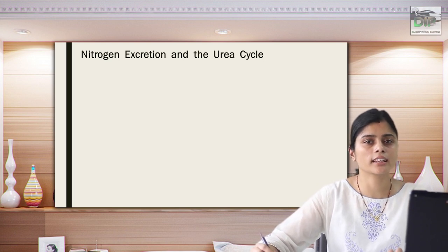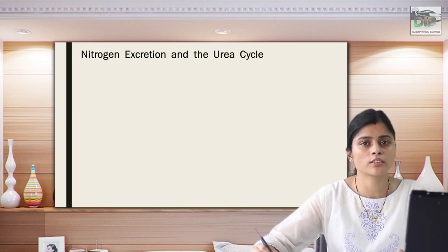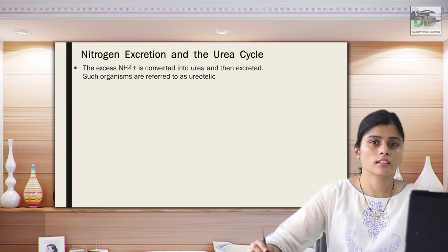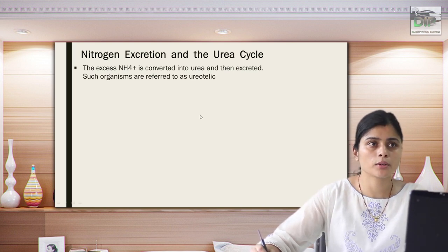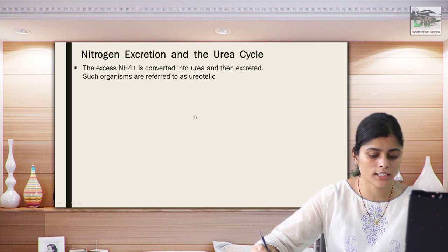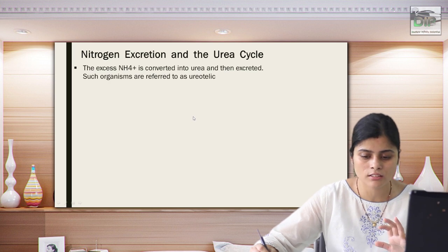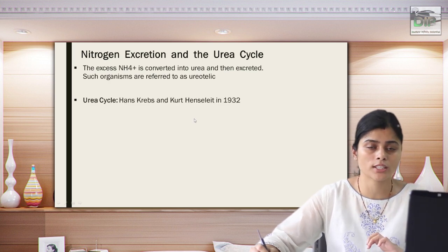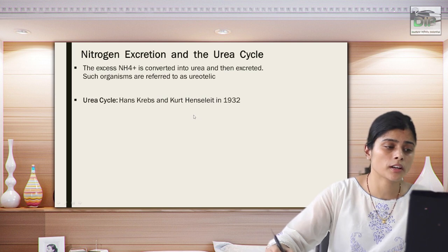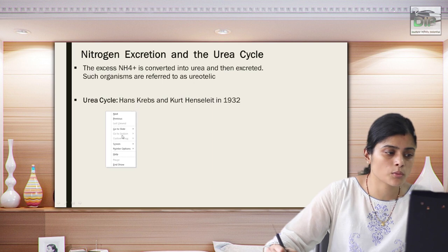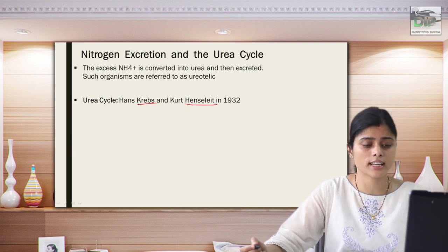The urea cycle is a very important pathway by which ammonia is detoxified and converted into more soluble, less toxic urea and excreted in urine. This is mainly because we are ureotelic organisms — humans who excrete urea in urine are known as ureotelic. The urea cycle is an important pathway taking place inside the liver and was first discovered by scientists Krebs and Henseleit, which is why it is also known as the Krebs-Henseleit cycle.